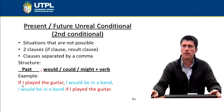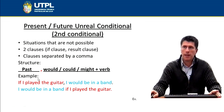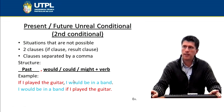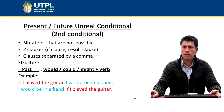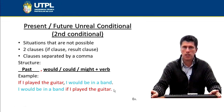Let's take a look at the example. If I played the guitar, I would be in a band. 'Played' is in the past tense, and 'would be' uses would in the result clause. Something particular about these sentences is that you can switch the clauses — I can write the result clause at the beginning and the if clause at the end. As you can see here: I would be in a band if I played the guitar.